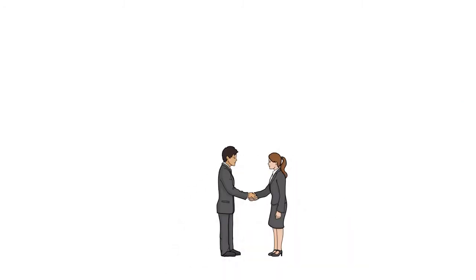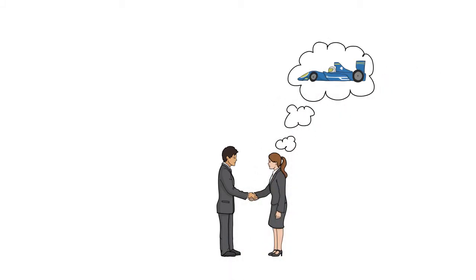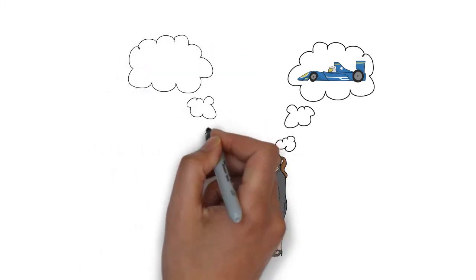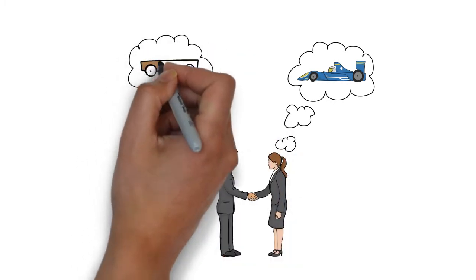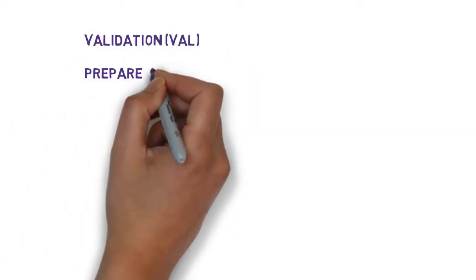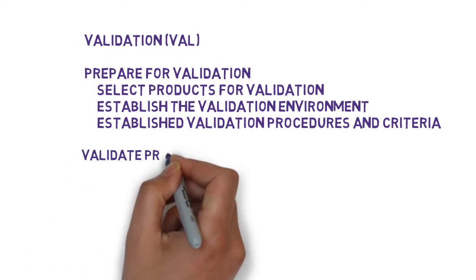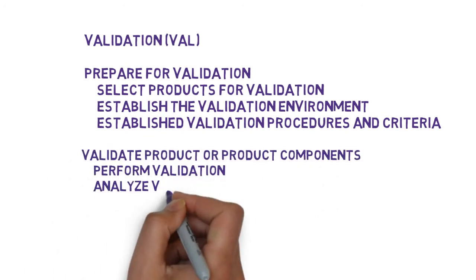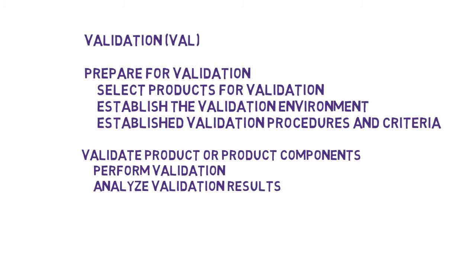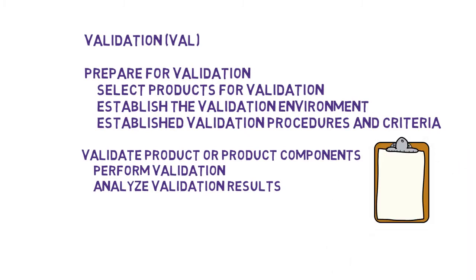Validation, in contrast to verification, answers the question: did I build the right product? It's not just about user acceptance testing, but about making sure, even in requirements gathering, that we have a good handle on how the product will actually be used so we can build the right solution. Validation has the same sequence as verification: identify what you're going to validate, make sure the environment is as close to real as possible, put some judgment criteria in place, then validate and analyze the results.